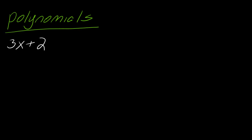3x plus 2 would work — it can have variables and whatever numbers you want. Technically, just a number by itself would also be a polynomial. Whatever number you want, we could put that in the family of polynomials; it would just be a constant polynomial.